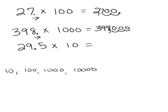Now it's only slightly different when you have a decimal in there. I'm going to multiply twenty-nine point five times ten. I'm going to move the decimal one place to the right. One zero in ten, so it just goes over one place, and the answer becomes two hundred and ninety-five.